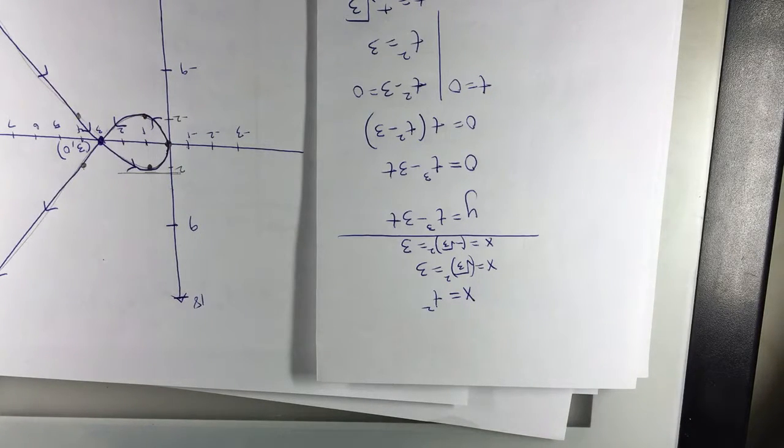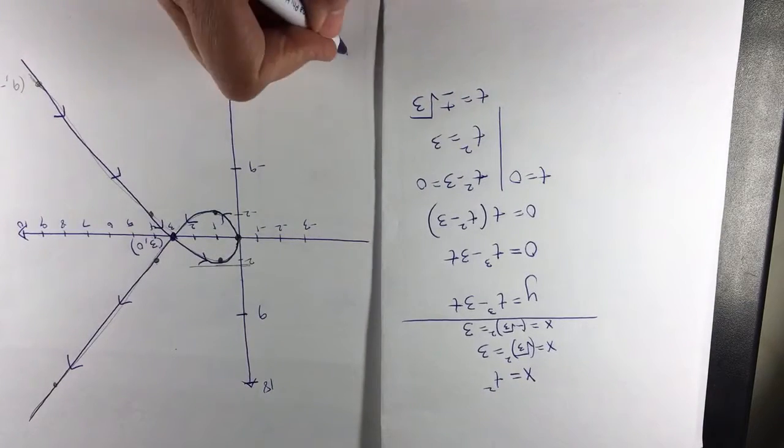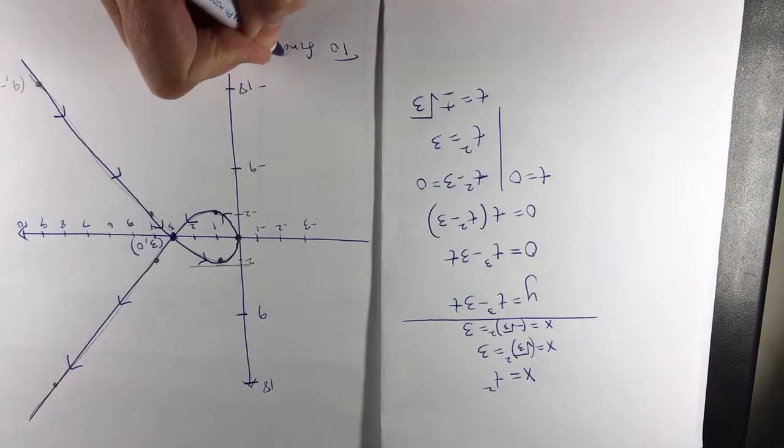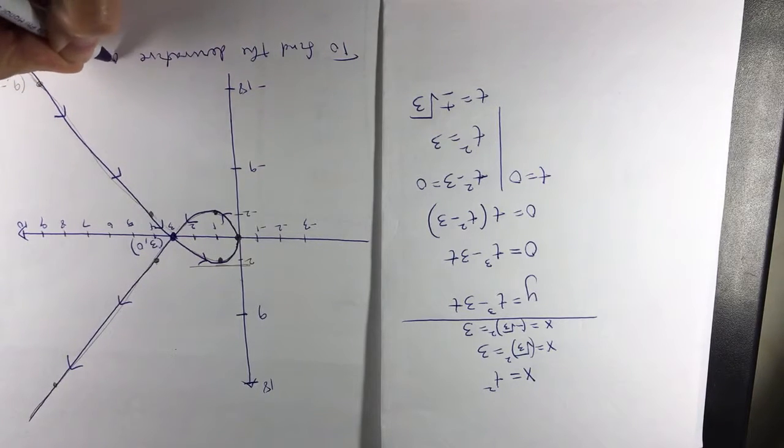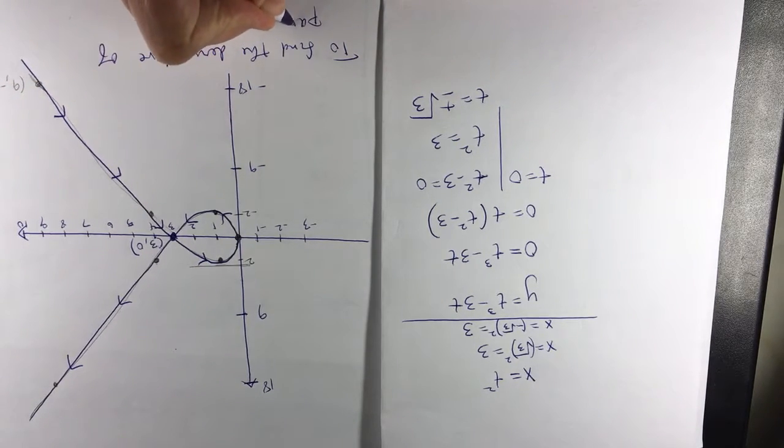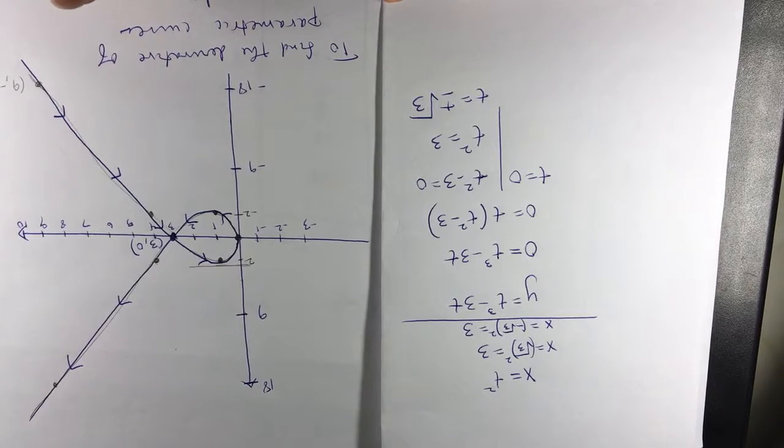Now here's the formula for the derivative of a parametric curve. This is on page 649. To find the derivative of parametric curves, we'll do this. We want dy over dx, and it equals dy over dt over dx over dt.